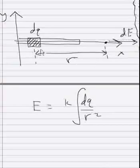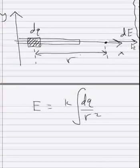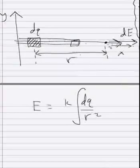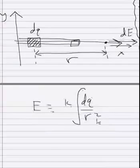What we want to do is add up all the effects on the electric field from the different dqs in our charge distribution. This is a very easy example because all the dqs produce dEs pointing in the exact same direction. Any point on this charge distribution — whether at the tip or anywhere else — is going to produce an electric field to the right on the positive x-axis. Because it's a vector quantity and all the vectors point in the same direction, we can just add them up. So E equals k times the integral of dq over r squared, all pointing in the x direction.